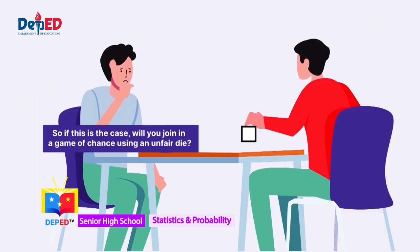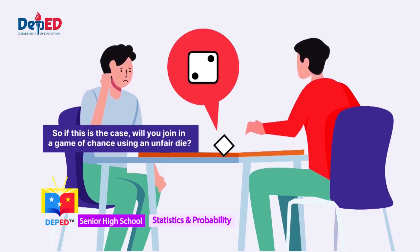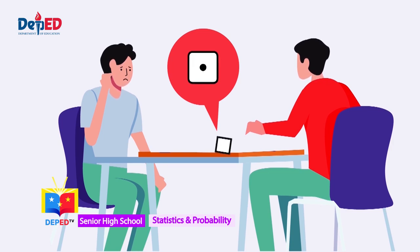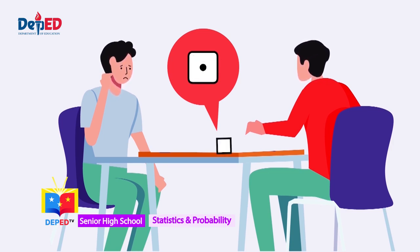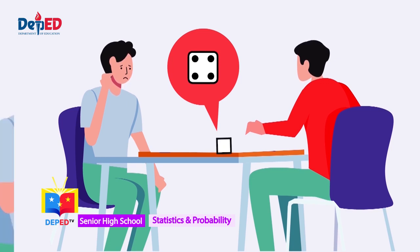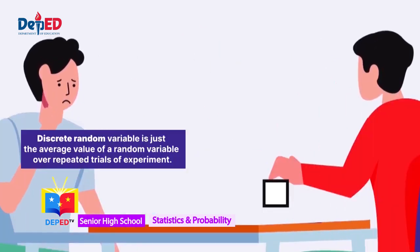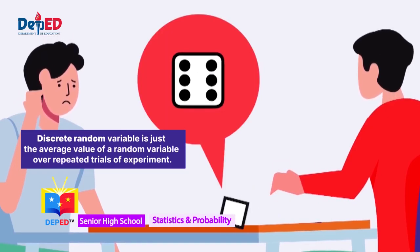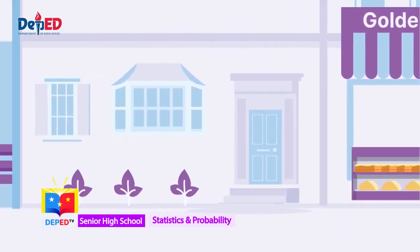So, if this is the case, will you join a game of chance using an unfair die? Knowing this information, your decision of joining or not joining a game using an unfair die depends on you — no right or wrong answer. But make sure you think more critically and logically before you make a decision. Remember, being fair and just is a virtue. Bear in mind that the mean of a discrete random variable is just the average value of a random variable over repeated trials of an experiment.